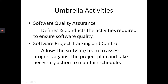In project tracking and control, a project plan will be there and software engineers should work according to that particular plan so that it will become possible for them to complete their task on time. This phase checks whether they are following the plan and whether they are on track. If they are not on track, the necessary action will be taken so that they complete and deliver the software project to the customer on time.